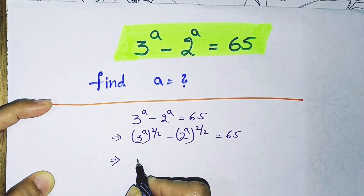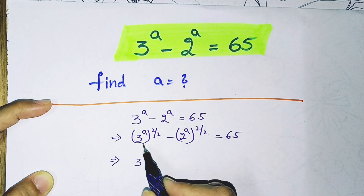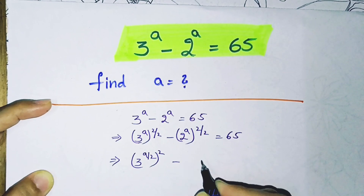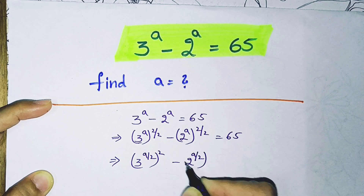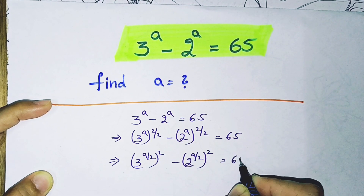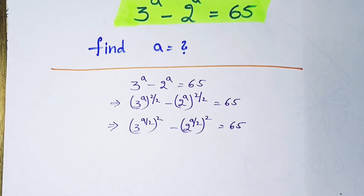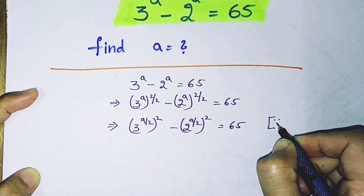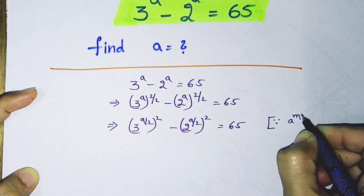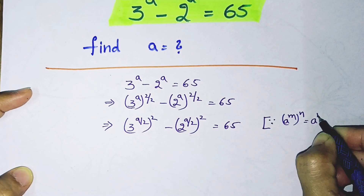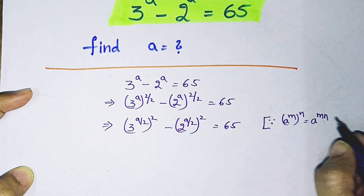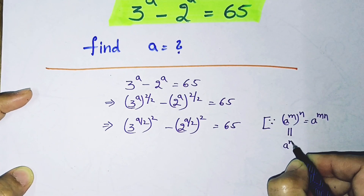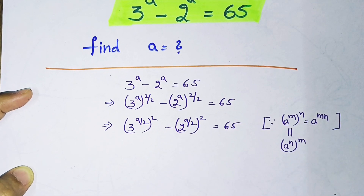Now, (3^a)^(2/2) can be written as (3^(a/2))² and (2^a)^(2/2) as (2^(a/2))², so the expression becomes (3^(a/2))² minus (2^(a/2))² equals 65. I'm using the formula: a^m whole to the power n equals a^(mn).